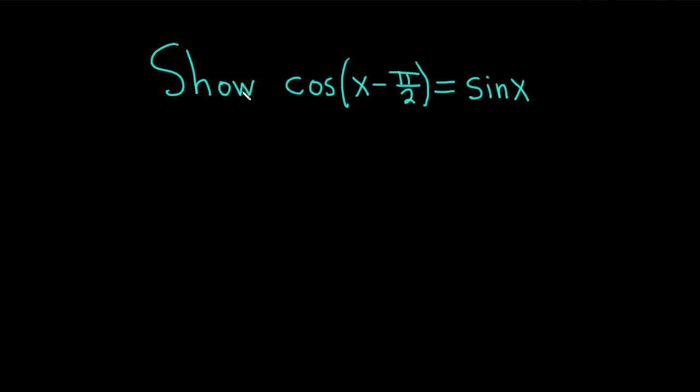Hello, in this video we're going to show that the cosine of x minus pi over 2 is equal to the sine of x. Let's go ahead and carefully work through this solution.